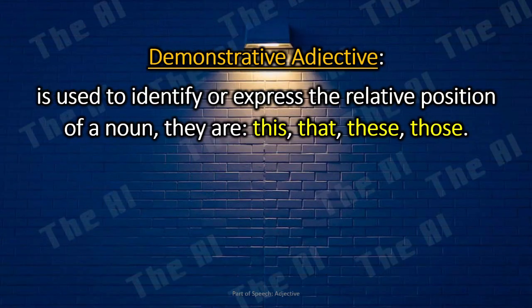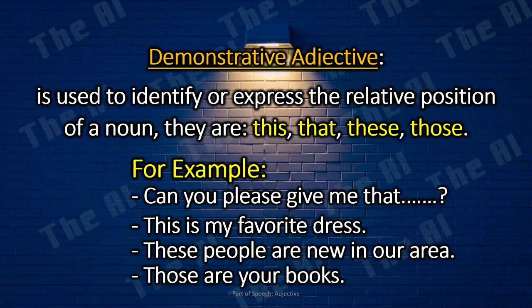Demonstrative Adjective. Demonstrative adjective is used to identify or express the relative position of a noun. They are: this, that, these, those. The demonstrative adjective in a sentence will come just before a noun or pronoun and tell you which one it is specifically modifying. For example: Can you please give me that red color pen? This is my favorite dress. These people are new in our area. Those are your books.